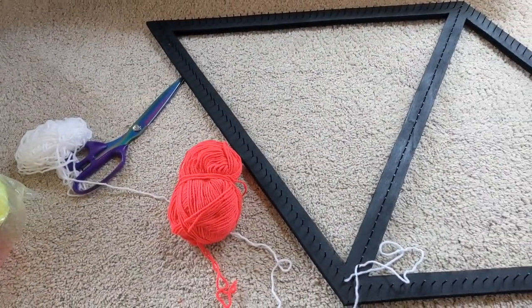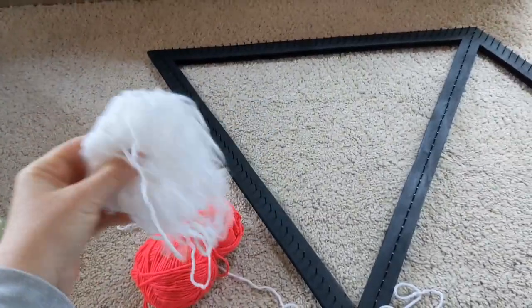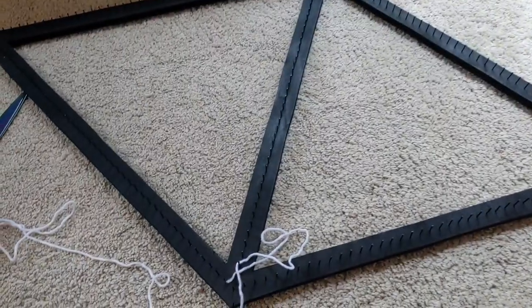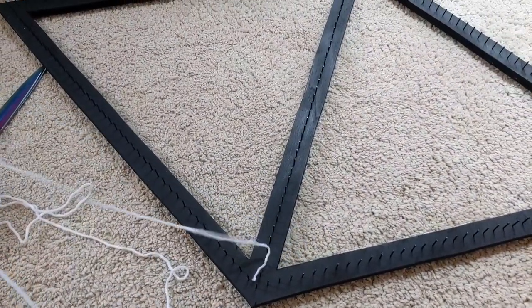We're ready to string our pattern. I have some UV reactive wool, this is red and this is white. I'll start with the pattern in white first and then see how it goes, maybe add a red layer on top.